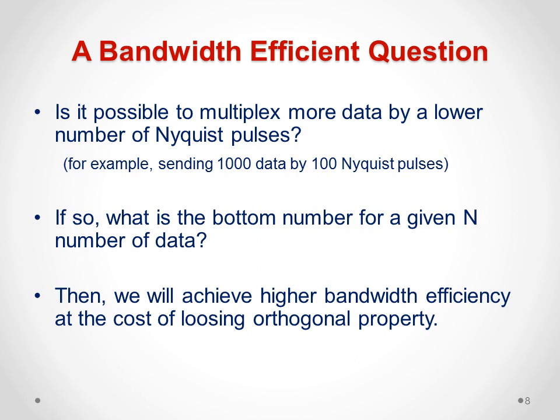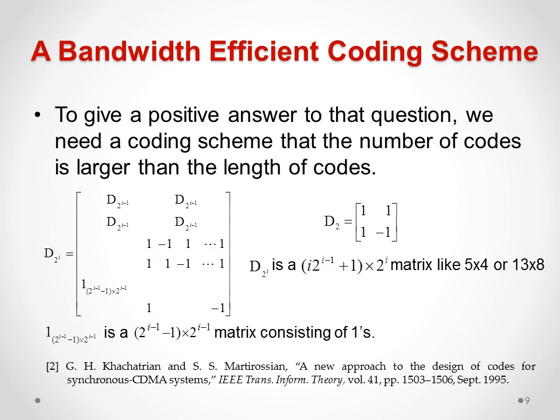Now I want to ask a bandwidth efficiency question: is it possible to multiplex more data using a lower number of Nyquist pulses? For example, sending 1000 data symbols using only 100 Nyquist pulses? If possible, what is the minimum number of pulses for a given amount of data? If the answer is positive, we achieve higher bandwidth efficiency, but at the cost of losing the orthogonal property. My answer is: if we use a set of codes whose lengths are less than the number of those codes, and they must of course be decodable, then we can have a positive answer.